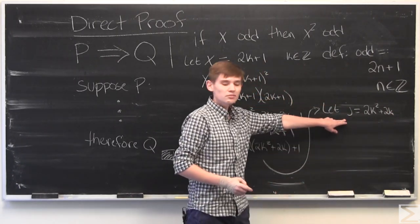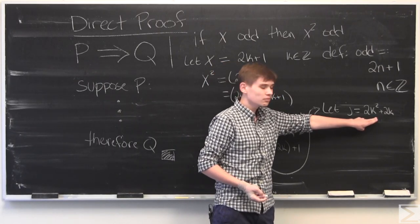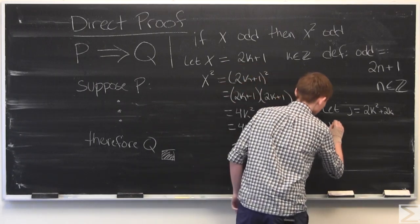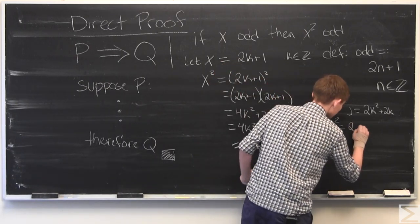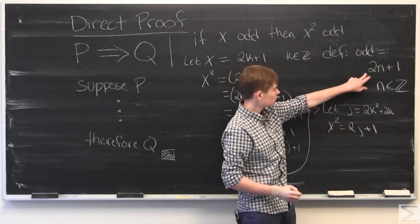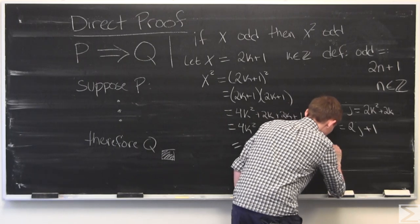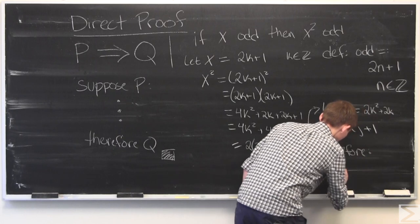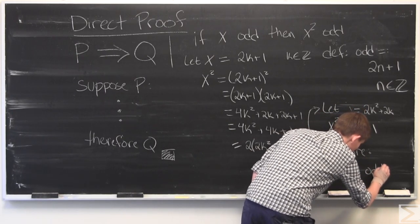Now J must be an integer because it's defined through k, which is an integer. And therefore X squared is equal to 2 times J plus 1, which matches our definition of an odd number. And therefore X squared is odd.